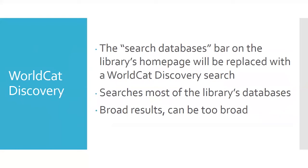The WorldCat Discovery system is a Google-style search. It searches most of our databases and gets you a lot of results, but that can be good and bad. If you enter a simple keyword like 'bees,' you'll get back over 42,000 results — that's information overload. In order to make searches more effective, we have to narrow down our topic and other factors.